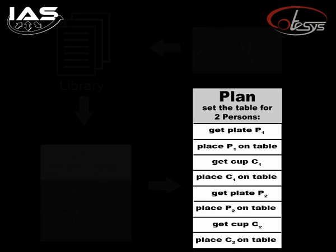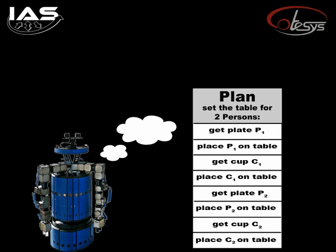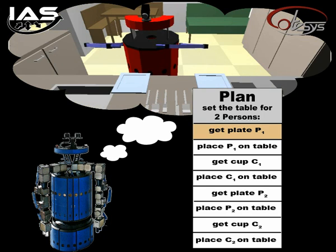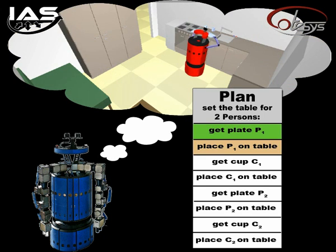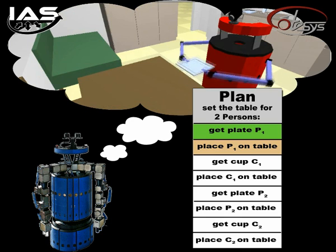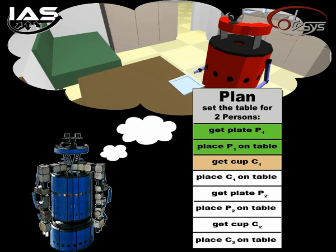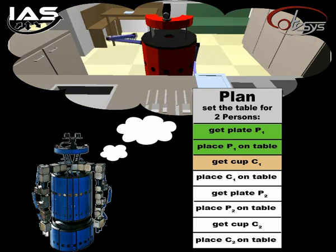Now it's going to be analyzed if it contains errors, or can be optimized to execute it faster and perhaps safer. Each single sub-plan is analyzed. The current one is highlighted and turns green if it is free from errors.